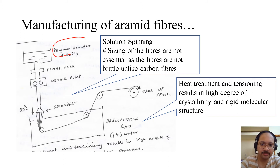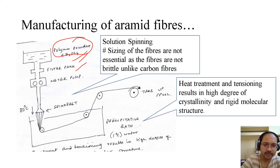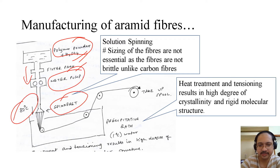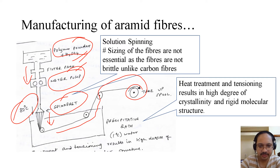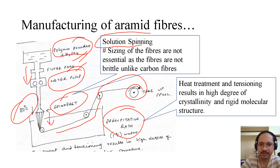For manufacturing, we begin with polymer powder dissolved in a sulfuric acid solution, which goes through a filter pack, then a metering pump, and then through a spinneret at 80°C. The fiber is pulled and gradually stretched, then wound onto a take-up spool. There is a precipitation bath at 1°C water in this process.